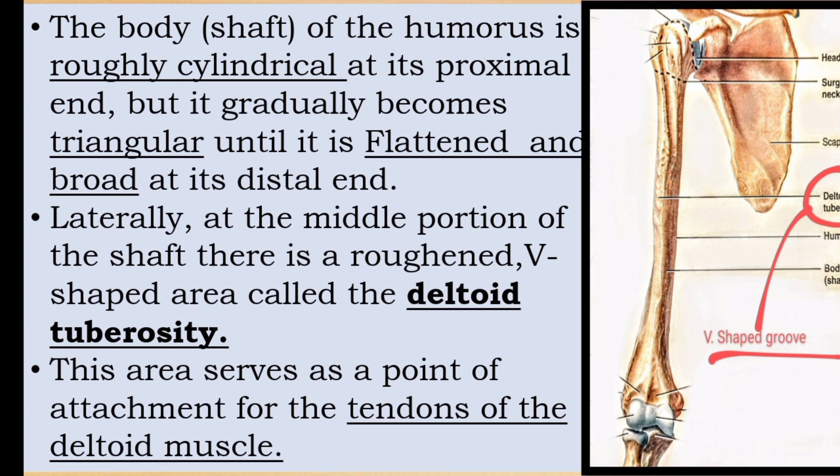The shaft is also called the body. The body of the humerus is roughly cylindrical at its proximal end, near the shoulder. At its distal end it becomes triangular, then flattened and broad. In the middle portion of the shaft there is a V-shaped rough area called the deltoid tuberosity.